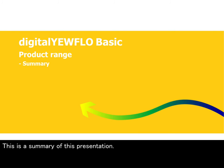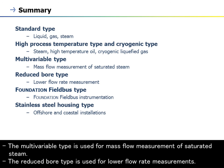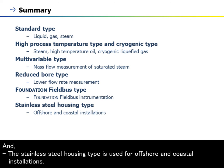In summary: the Standard Type is used for liquid, gas, and steam applications. The High Process Temperature and Cryogenic Type is used for steam, high temperature oil, and cryogenic liquefied gas. The Multivariable Type is used for mass flow measurement of saturated steam. The Reduced Bore Type is used for lower flow rate measurements. The Foundation Fieldbus Type is used for Foundation Fieldbus instrumentation. And the Stainless Steel Housing Type is used for offshore and coastal installations.